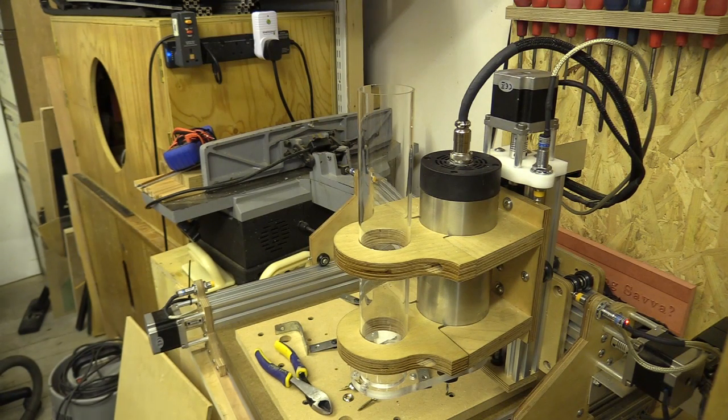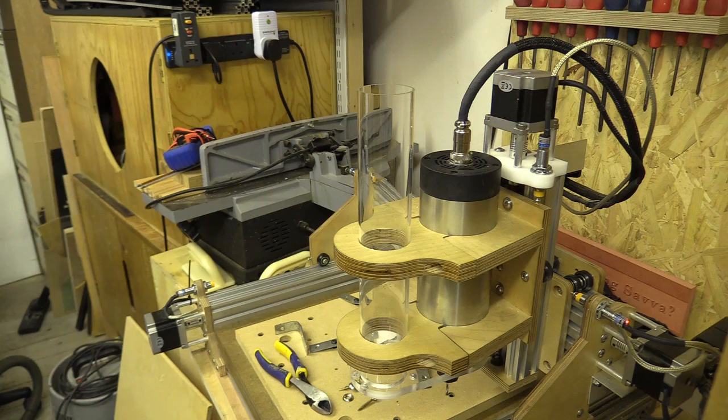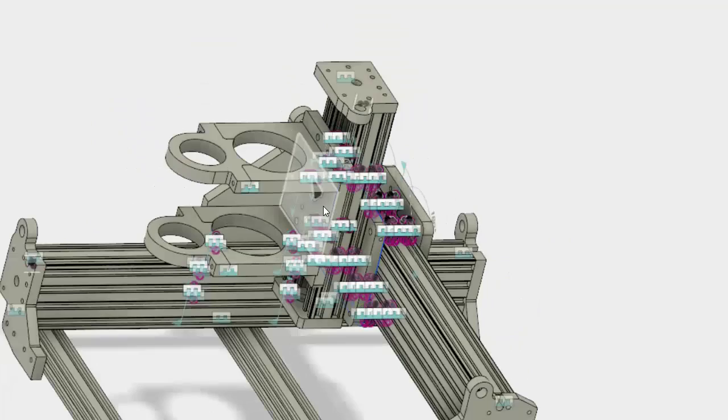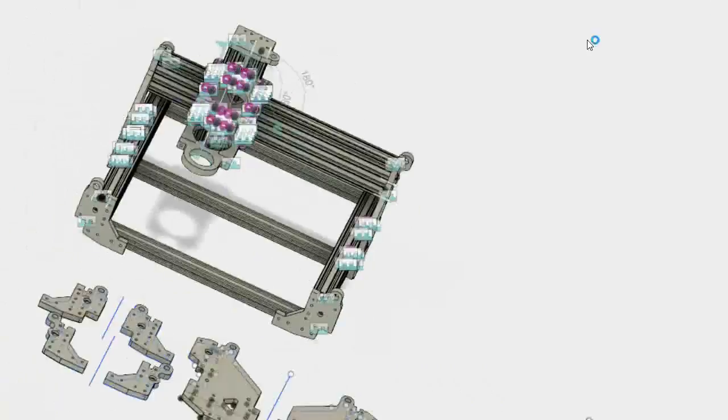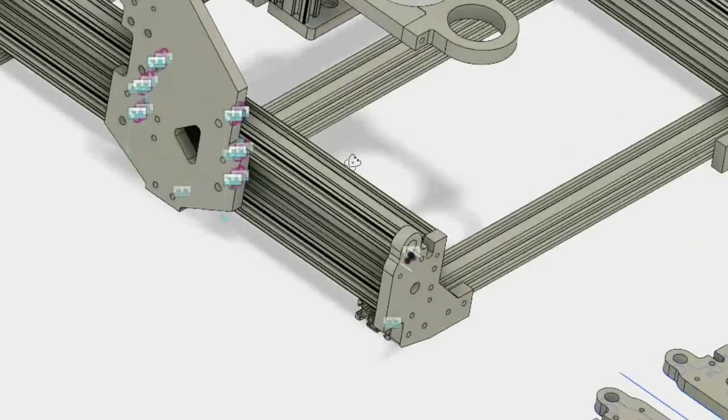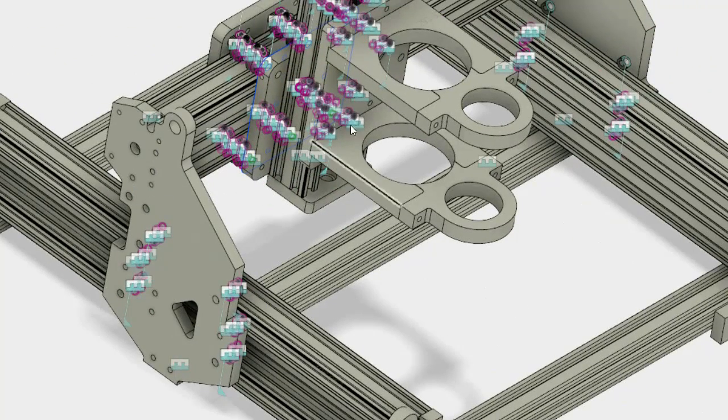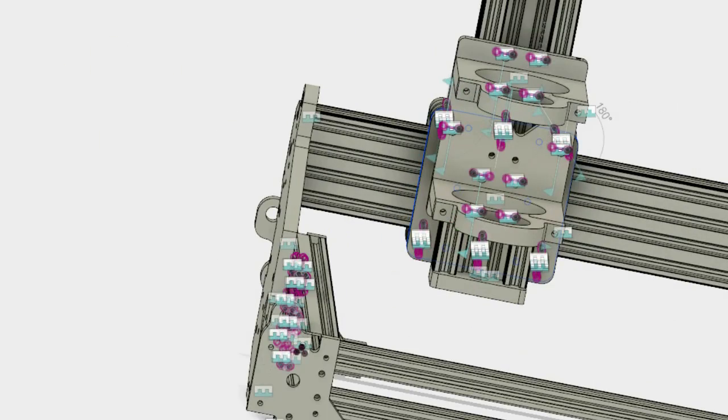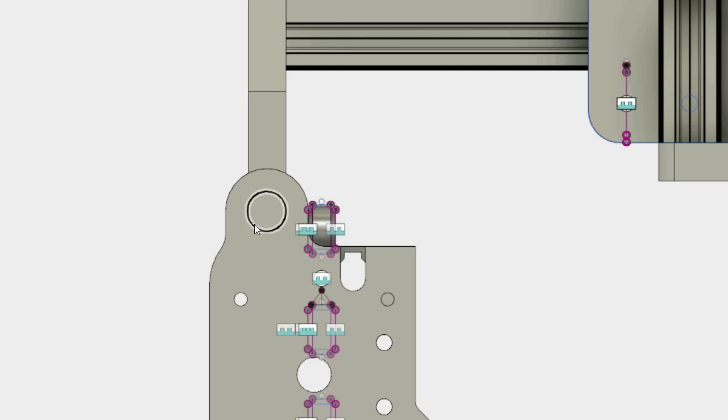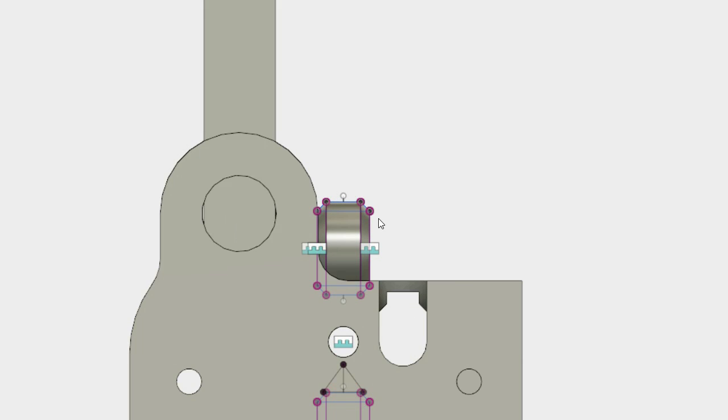So now I need to go and make some changes to the Fusion 360 file. Okay so I've just made some changes to the plate. I've changed the thickness to 12mm. I've decided not to use 8mm Aceto and go with 12mm instead. But since I've done that I've had to change the positioning of the proximity sensor opening.